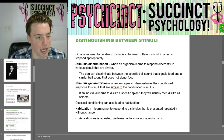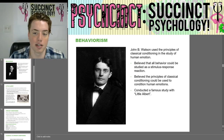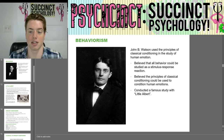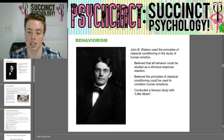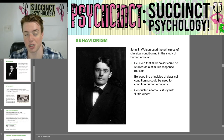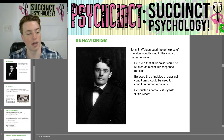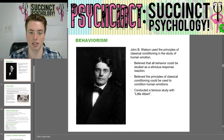Next we have behaviorism. John B. Watson used the principles of classical conditioning in the study of human emotion. He believed that all behavior could be studied as a stimulus-response reaction, and that the principles of classical conditioning could be used to condition human emotions. He conducted a famous study with a little boy called Little Albert. We will stop the video here for today and continue Unit 6 later.